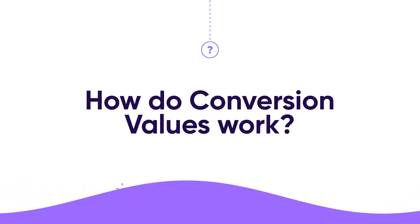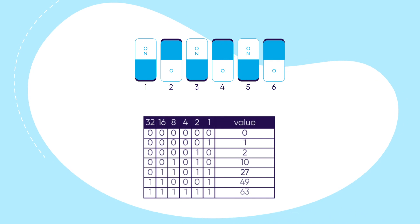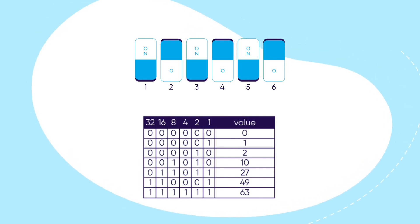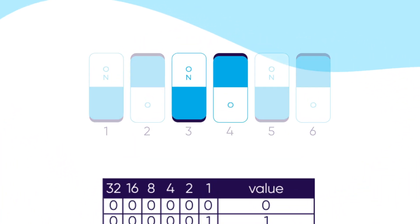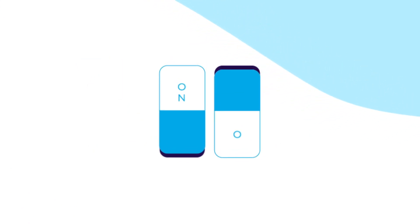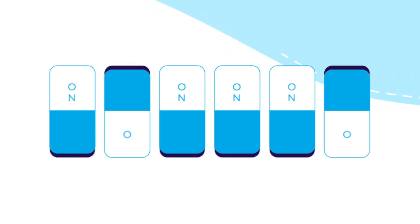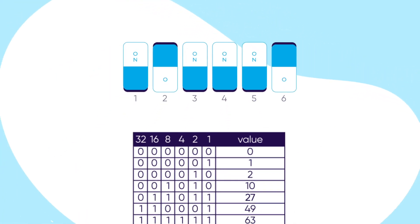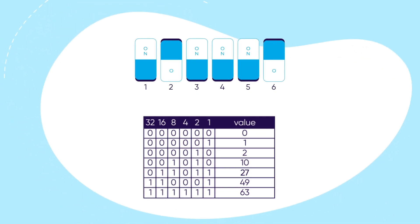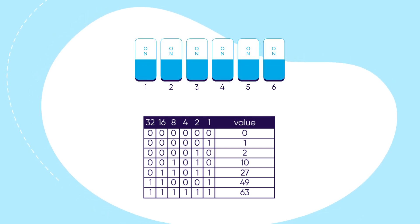What does that look like in practice? In SK Ad Network, conversion values are formatted in binary logic using 6 bits, or 64 signals. You can think of bits like a switch — the switch can either be turned off, meaning the binary digit is 0, or turned on, in which case the binary digit is 1. Apple provides developers 6 bits in total, and by turning on or off those 6 bits, there are 64 different combinations available, with the lowest value being 0 and the highest 63.